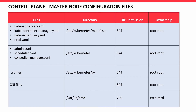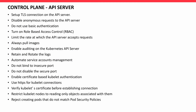Now let's look at CIS Benchmark recommendations for the API server. Set up a TLS connection on the API server. Disable anonymous requests. Do not use basic authentication — use the right RBAC controls to access the API server. Limit the rate at which the API server accepts requests. Always pull images. Enable auditing on the Kubernetes API server. Retire and rotate the logs.